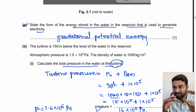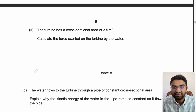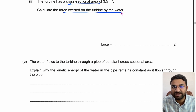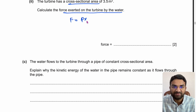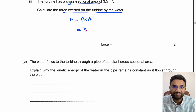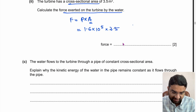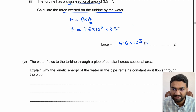The turbine has a cross-sectional area of 3.5 m². Calculate the force exerted on the turbine by the water. Force = Pressure × Area = 1.6×10⁶ × 3.5 = 5.6×10⁶ N. So the force exerted on the turbine is 5.6×10⁶ newtons.